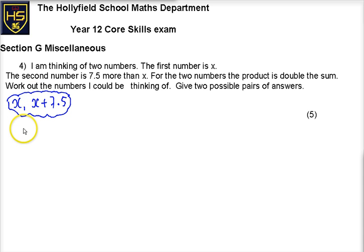So it says the product of the numbers, that means they multiply. So the product of the numbers, x multiplied by x plus 7.5. The product is double the sum. So it's the same as having two lots of x plus x plus 7.5.